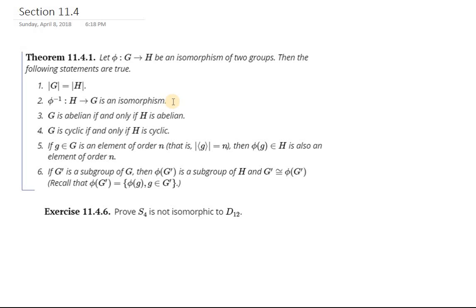Let me just say something about section 11.4. Section 11.4 gives several conditions, required conditions, for two groups to be isomorphic. These conditions are contained in theorem 11.4.1.